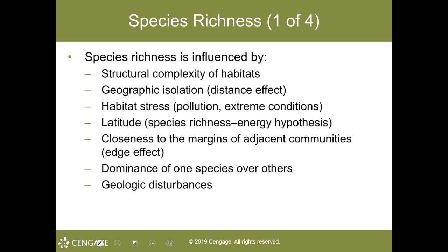The latitudinal gradient: species richness goes directly with the energy hypothesis. Tropical and subtropical areas experience higher species richness because of longer growing seasons, as opposed to areas with shorter growing seasons and periods of low temperatures. The closeness to the margins of adjacent communities — the edge effect — is a place in which diversity abounds.